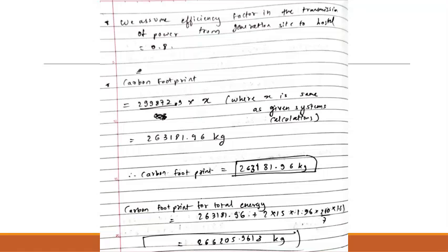Now we again take the efficiency factor for the transmission of energy to be 0.8, and to calculate the carbon footprint for the proposed system, we plug in the required energy of the hostel for the new system. From the below expression, we have the carbon footprint for the new system to be 263,181.96 kilograms, which is significantly less, around 1.5 times less from 450,000 around that we had for the initially suggested system for the hostel. So just the given changes make so much change in the carbon footprint and also in the required energy for the hostel.